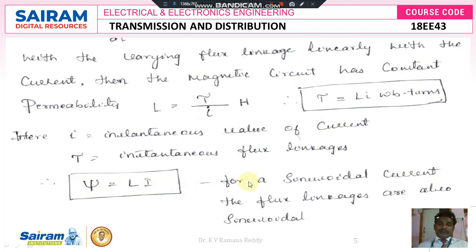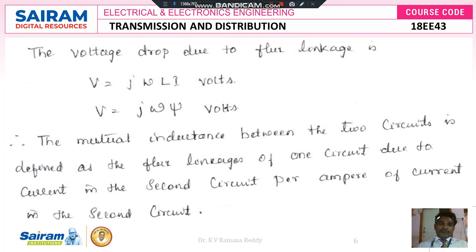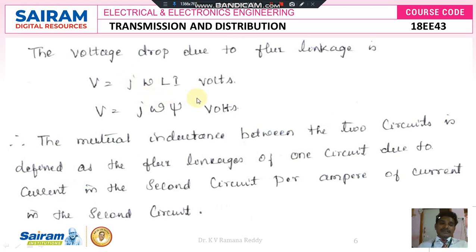For a sinusoidal current, the flux linkage will also be sinusoidal. Once flux linkage takes place, there exists a voltage drop. The voltage drop due to flux linkage is V. Generally we know the formula V equals IR, but for an alternating quantity with inductance as reference, V is equal to XL into I. XL means omega L, and omega L is a reactive component which is expressed with J. Therefore the voltage drop across the inductor due to flux linkage is expressed in imaginary form.